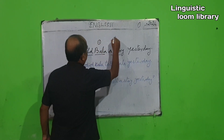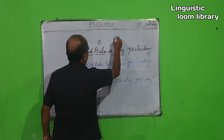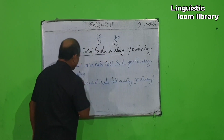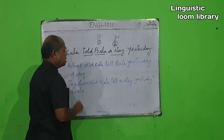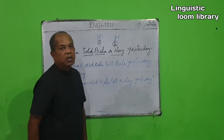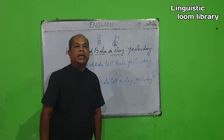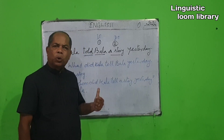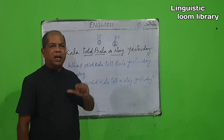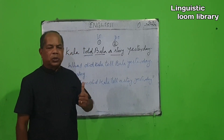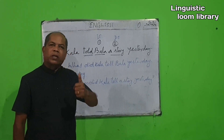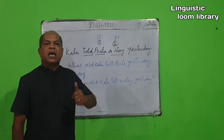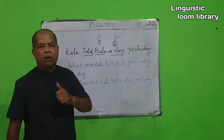This is the direct object and this one is the indirect object. This is the way that you should find out the direct and indirect object in a sentence. Story and Bala are nouns, so a noun can come as a direct object as well as an indirect object.